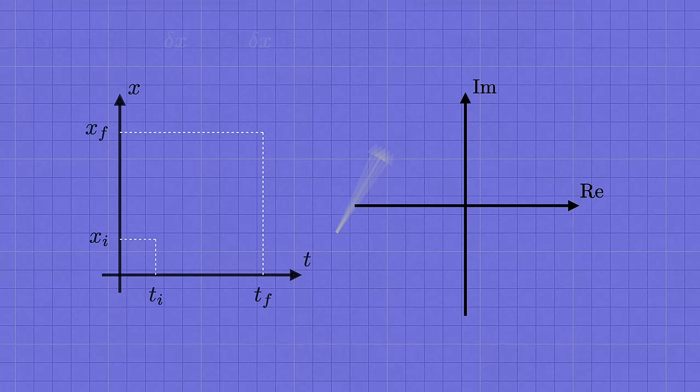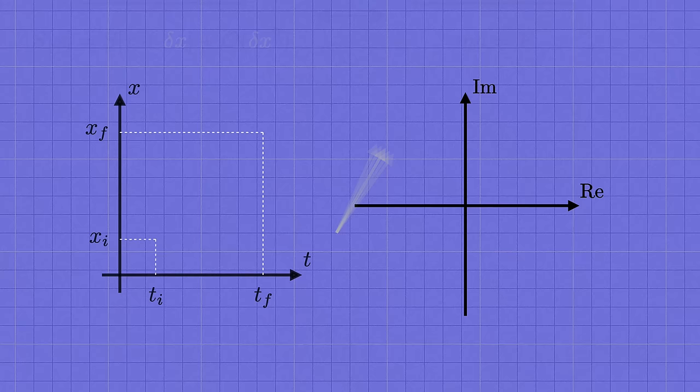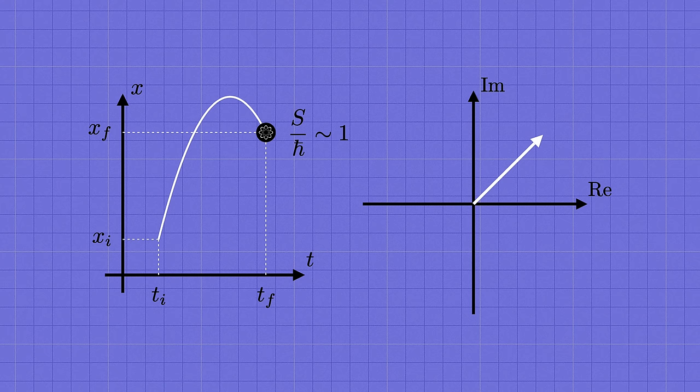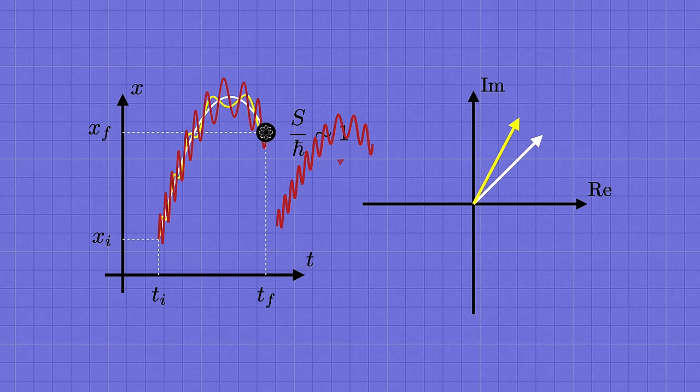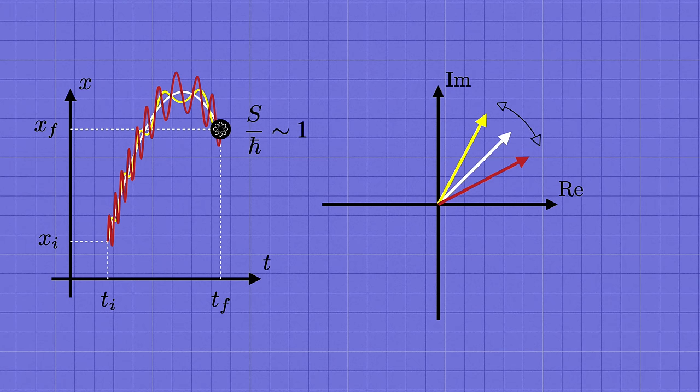But that was for a classical object like a baseball. For something like an electron on the other hand, the size of the action will be much smaller, close to the scale of h-bar. So the angles s divided by h-bar won't be such huge numbers anymore. And that means that the arrows for non-classical paths don't necessarily cancel out. Then, in the quantum regime, it's not true that only the single classical trajectory survives. There can be a wide range of paths that contribute, and f equals ma therefore isn't very relevant when it comes to understanding the behavior of quantum particles.